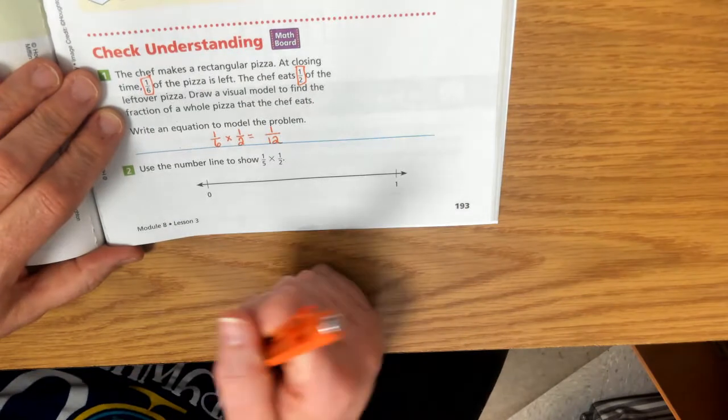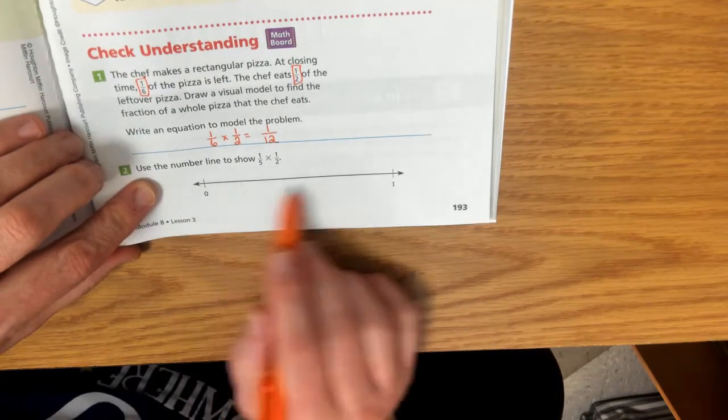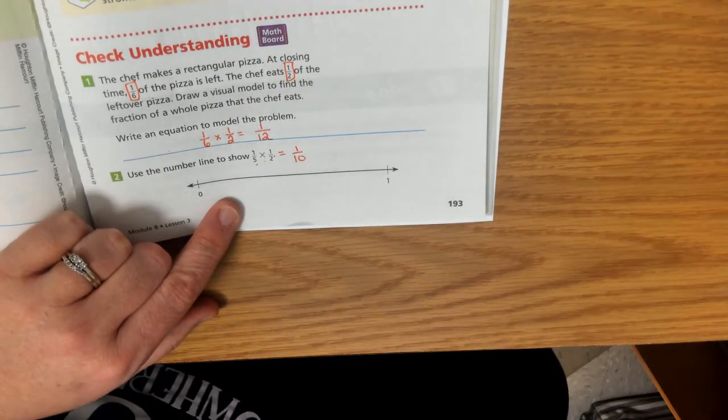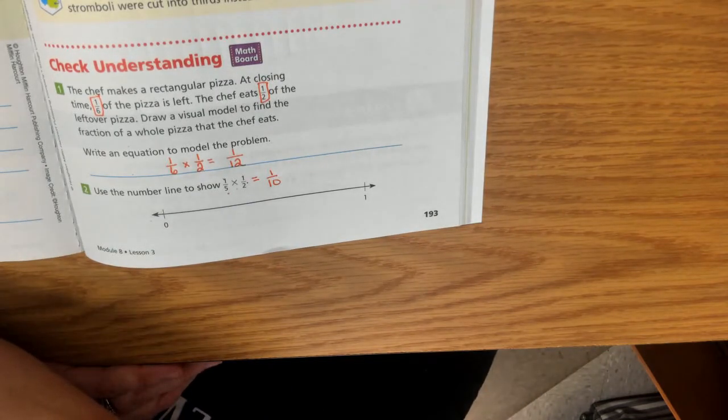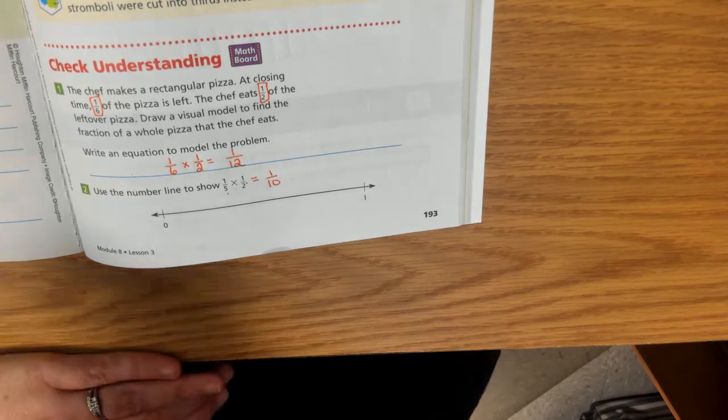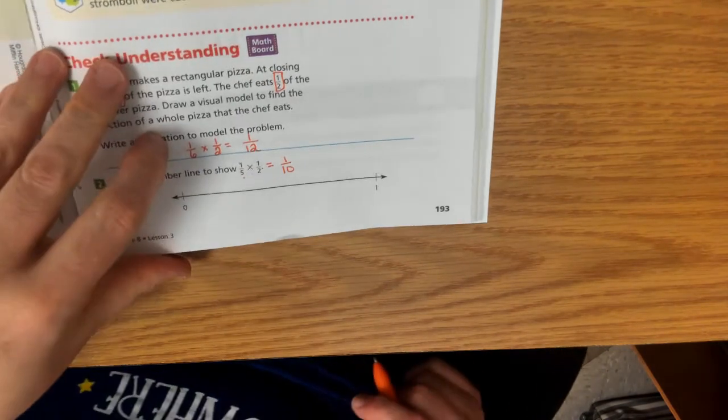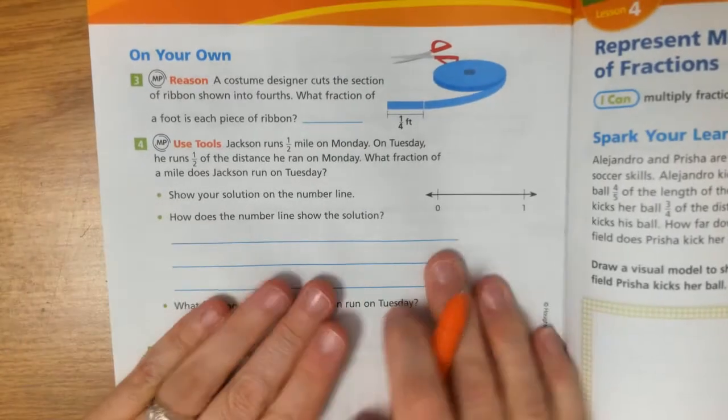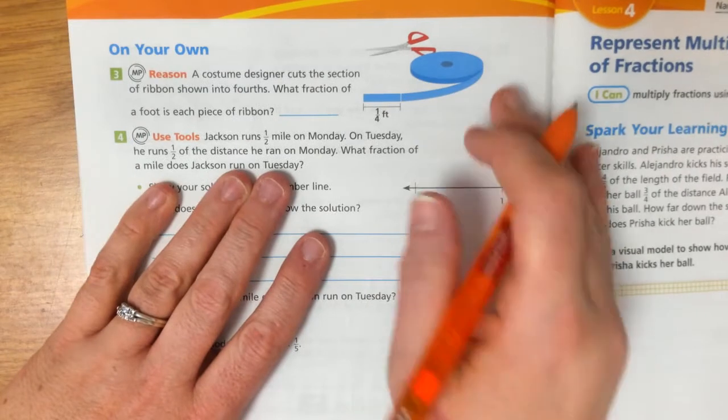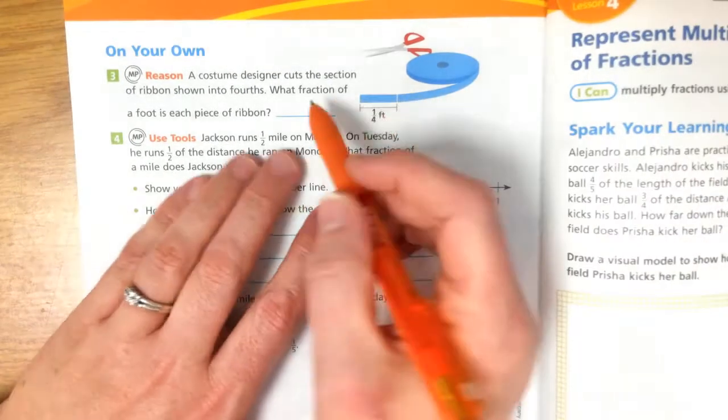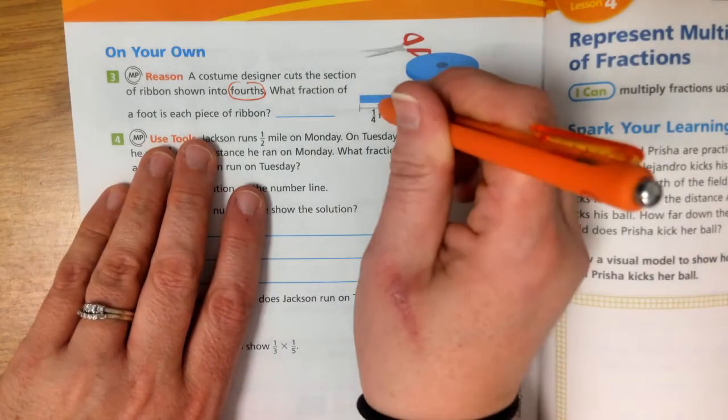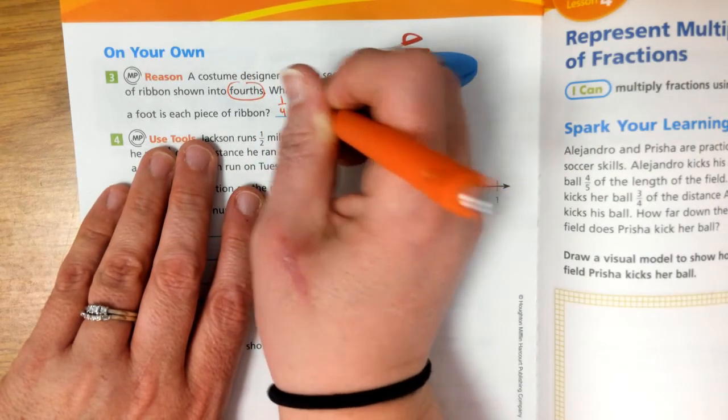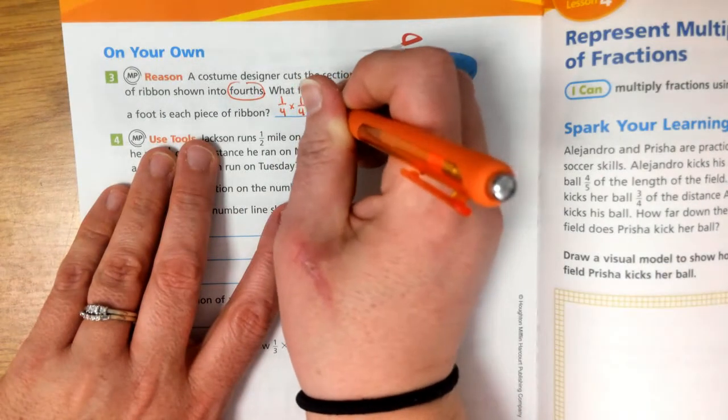So we're just taking our two fractions, and we are multiplying them together. So we're not going to worry about the number line. One-fifth times one-half equals one-tenth. So don't worry about the pictures. We just can do the math. We know we can multiply. Number three. A costume designer cuts the section of ribbon shown into fourths. What fraction of a foot is each piece of ribbon? So if she's cutting it into fourths, and then each piece is one-fourth. So one-fourth times one-fourth equals one-sixteenths foot.